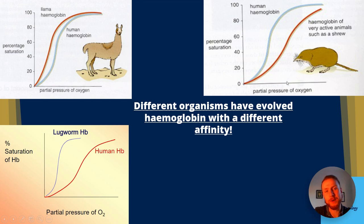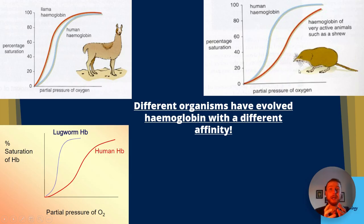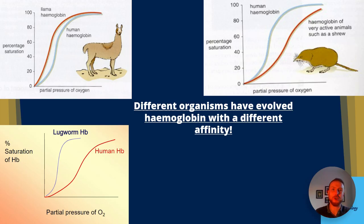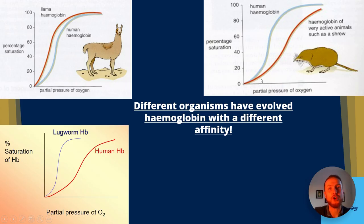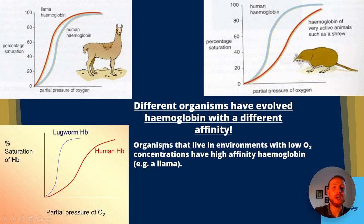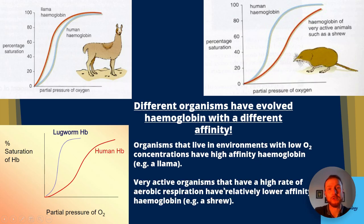The shrew is the opposite. Because it's very active and has a high metabolic rate — partly due to its small size and incredibly high surface area-to-volume ratio which means it loses heat rapidly — it needs to drop off lots of oxygen at respiring tissues to fuel aerobic respiration. So the shrew has haemoglobin with a lower affinity for oxygen, and its dissociation curve sits to the right. To summarise: organisms in low oxygen environments have high affinity haemoglobin; very active organisms with a high rate of aerobic respiration have relatively lower affinity haemoglobin.